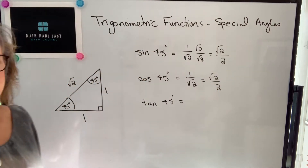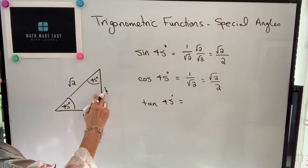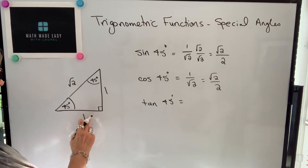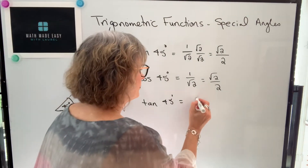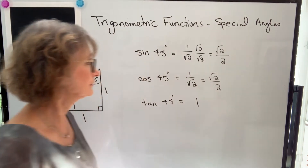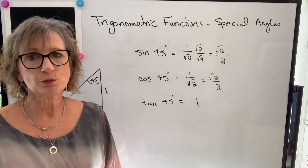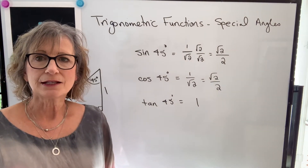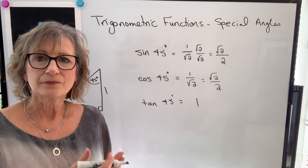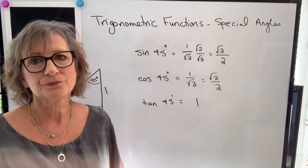Tangent of 45 degrees is opposite over adjacent, so one over one, which is simply one. Those are the values you're probably going to be expected to know, likely in this form.